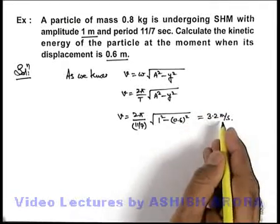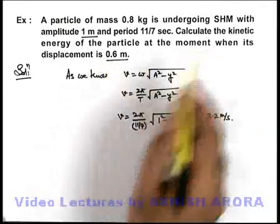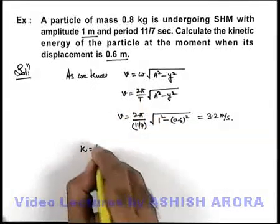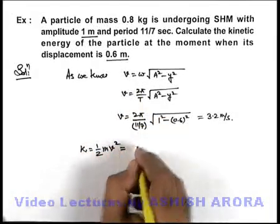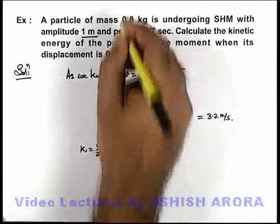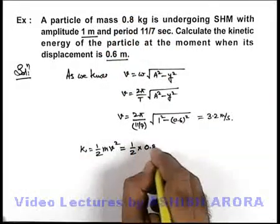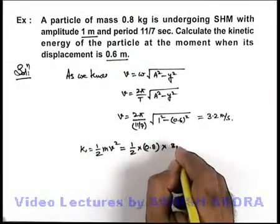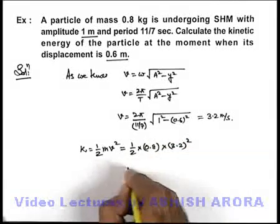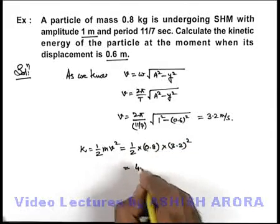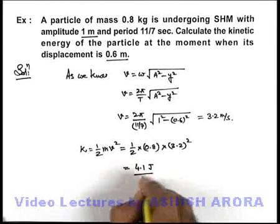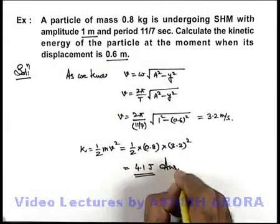And if we have the speed at this displacement, we can easily find out the kinetic energy as simply (1/2)mv². This is (1/2) × 0.8 kg × (3.2)². On calculating, we'll get the kinetic energy to be 4.1 Joules. That'll be the answer to this problem.